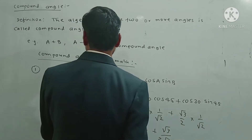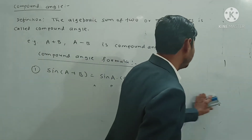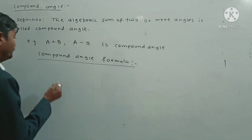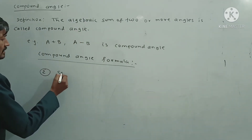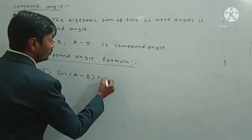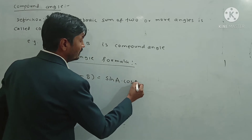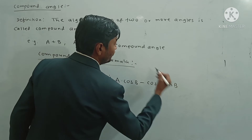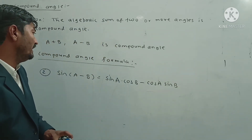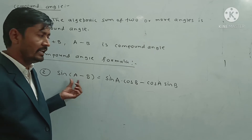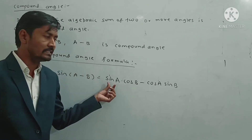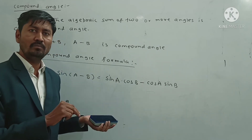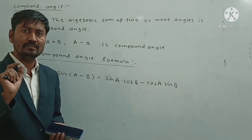Our second formula is sin(A-B). Sin(A-B) is equal to sin A cos B minus cos A sin B. The same concept applies: sine of the first angle times cosine of the second angle, minus cosine of the first angle times sine of the second angle. The only difference from the previous formula is the minus sign.